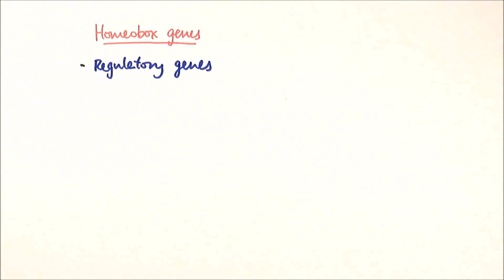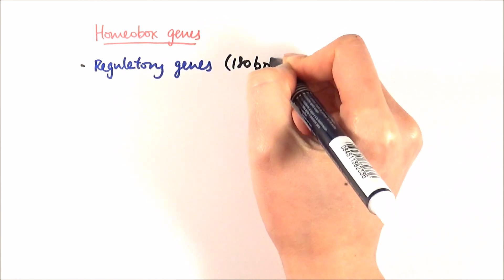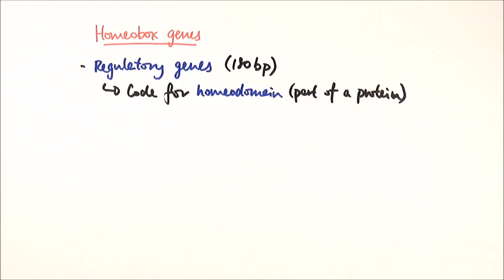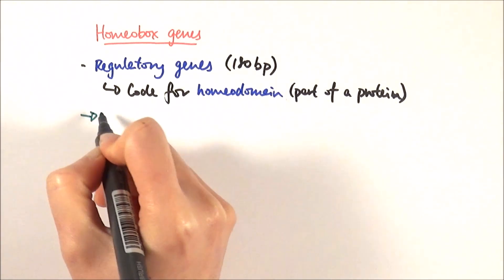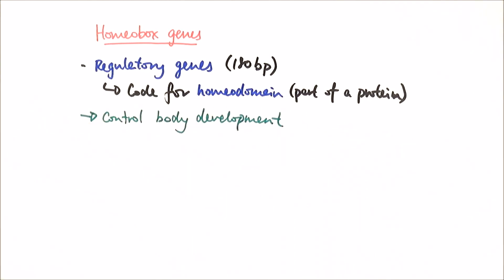Homeobox genes are regulatory genes. If you remember from the lac operon video, regulatory genes are genes that code for proteins involved in DNA regulation. They are about 180 base pairs long. More specifically, they code for the homeodomain, which is part of a regulatory protein that carries out the function.